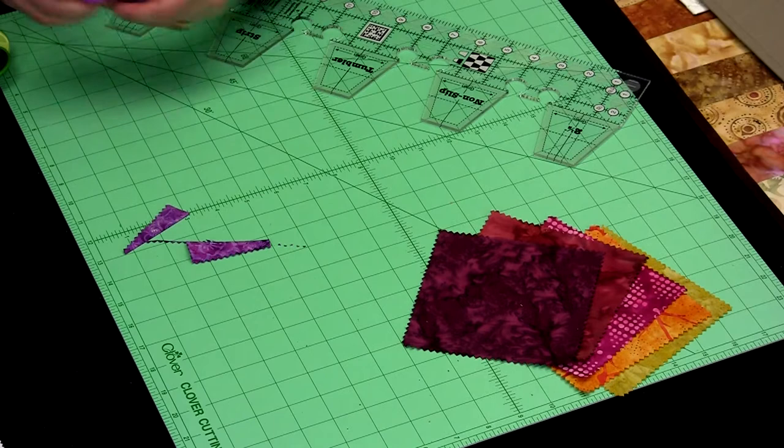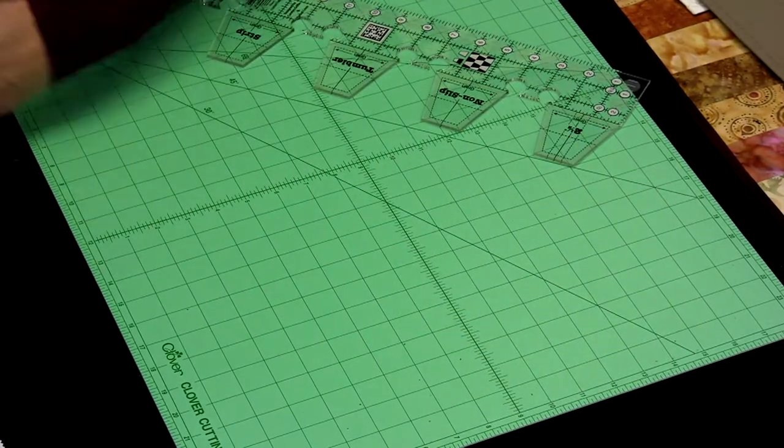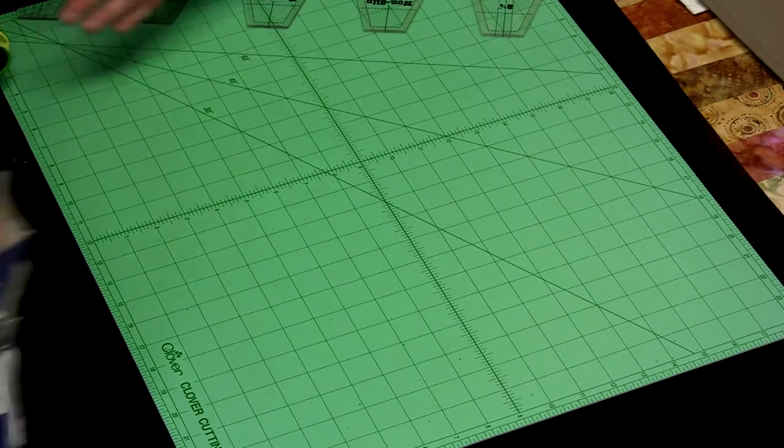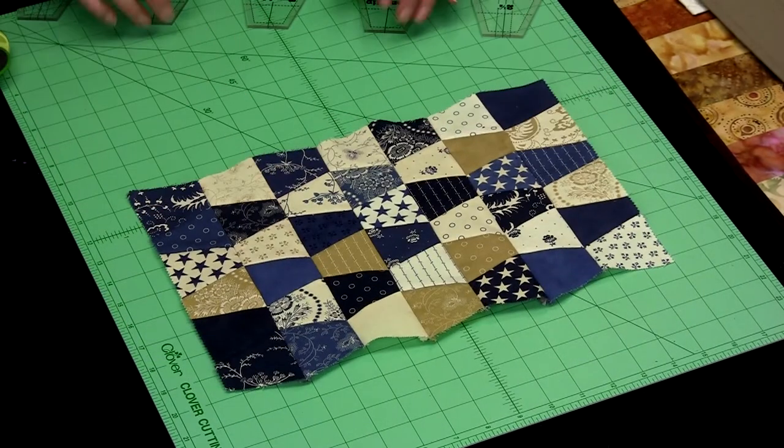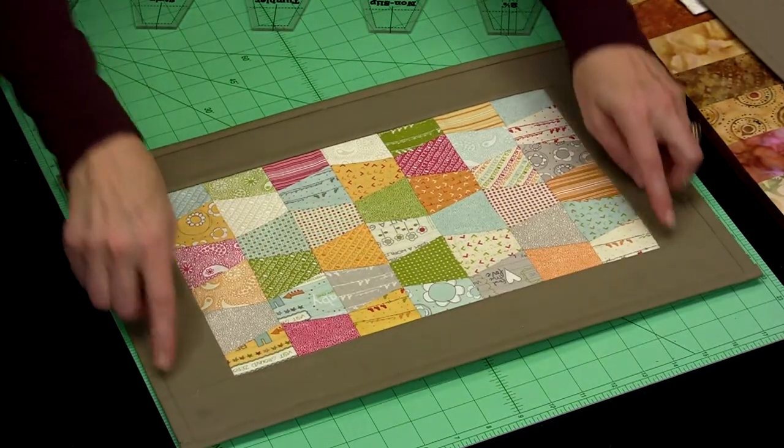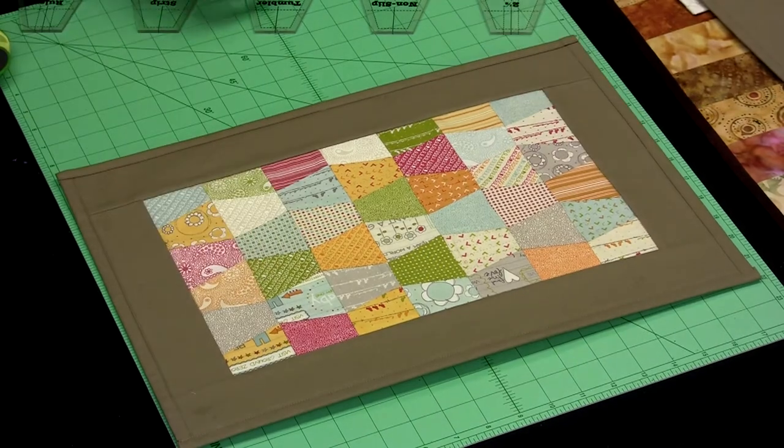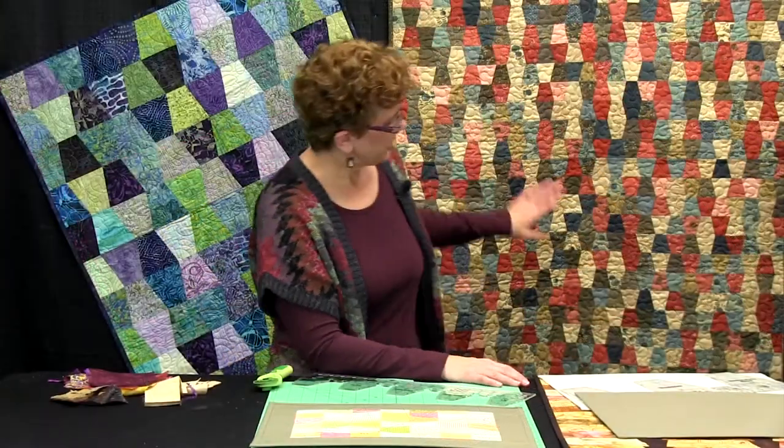So let's look at the projects made using this tool. First of all, from those 2½ inch squares, I put them together in a random fashion, added on a 2½ inch border, brought my back to the front, and I have a placemat.